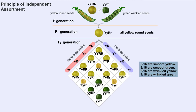The four different phenotypes are always found in a ratio of 9 to 3 to 3 to 1 in the F2 generation. This is called a Punnett square, named for the scientist who first devised it.